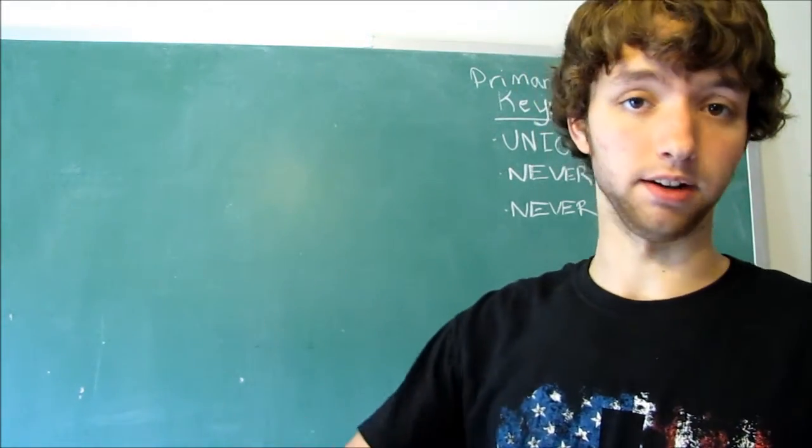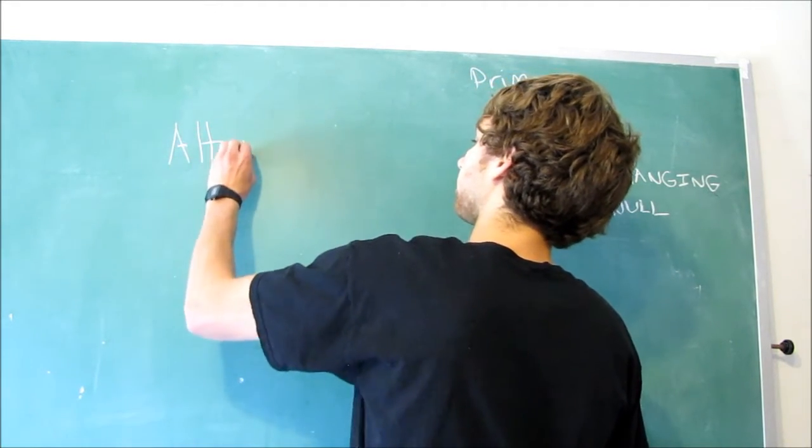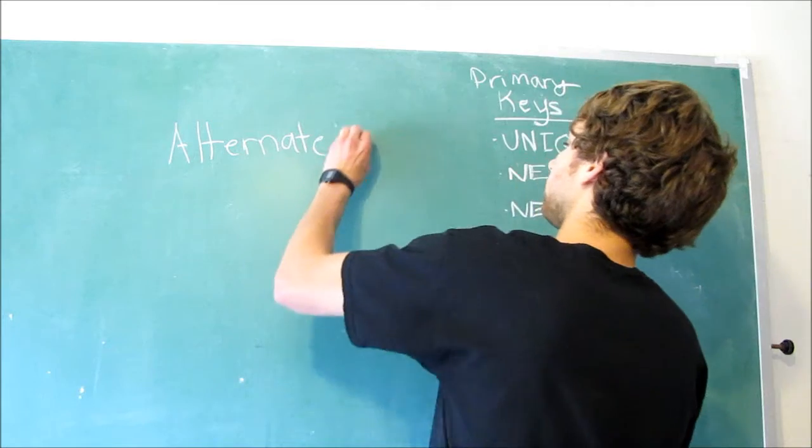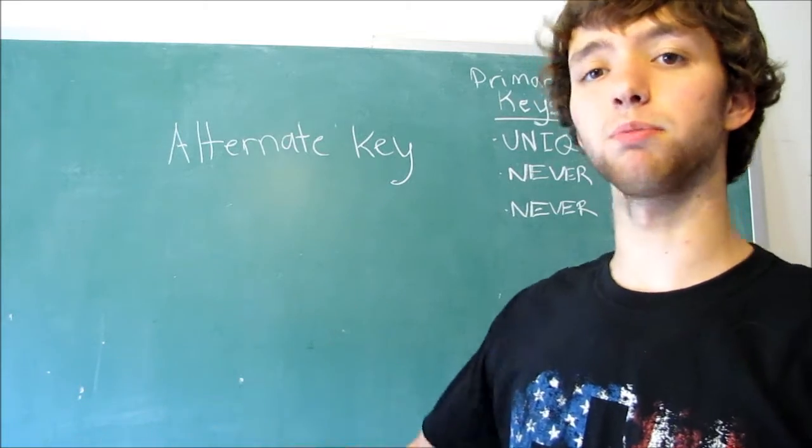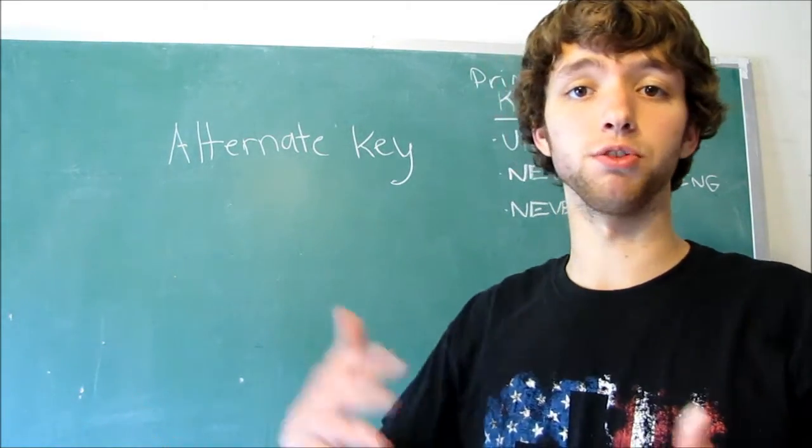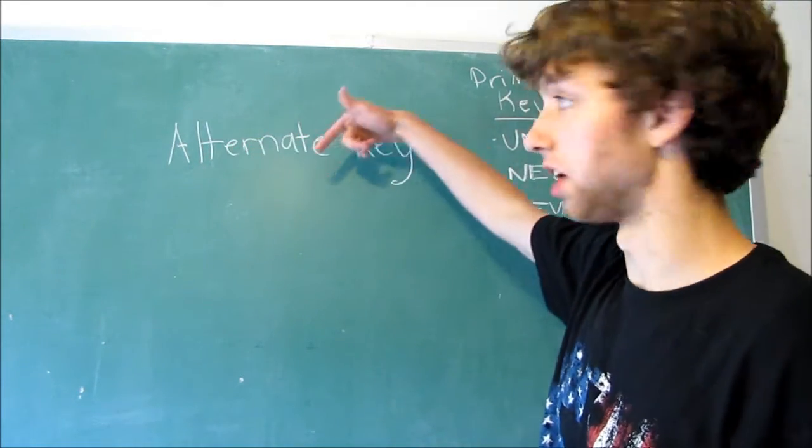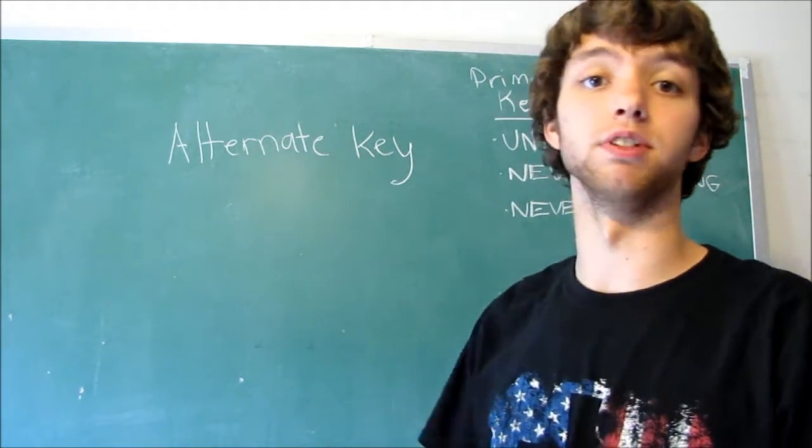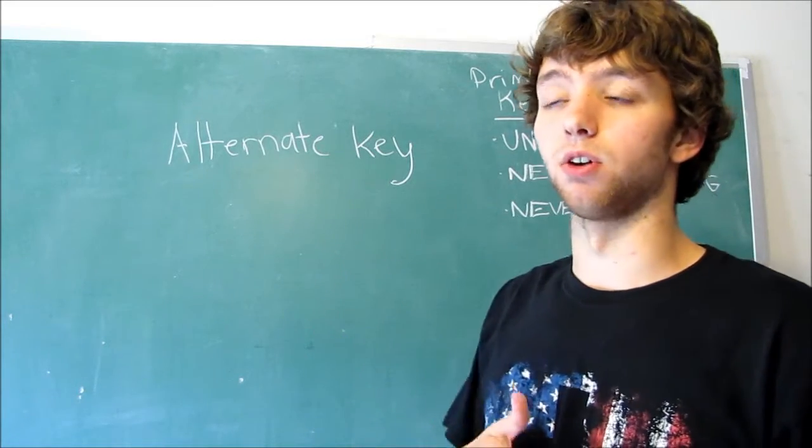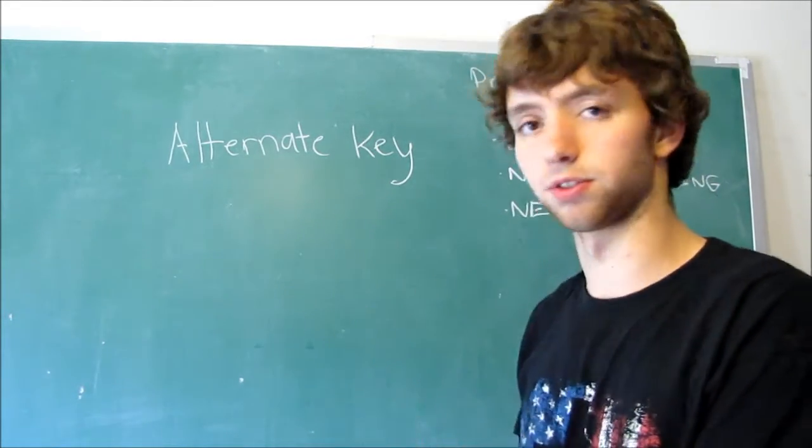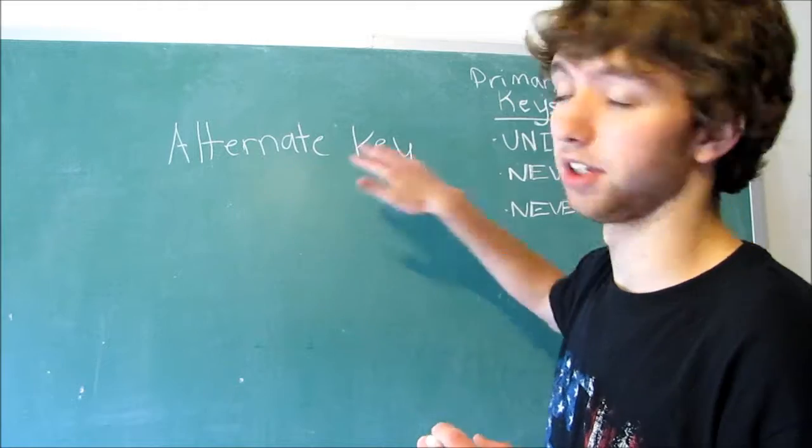Now, the other candidate keys that we did not choose, they're known as alternate keys. An alternate key, it works, I mean, it could be the primary key, but basically, it's all the candidate keys that were not selected as the primary key. You do not, you're not required to define all of your alternate keys in your database. In fact, you don't even need any alternate keys. But, you may want to, because often times they will be something you're doing searches for, or connecting tables, or whatever it is. Alternate keys might be useful.